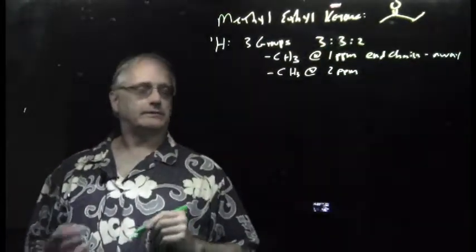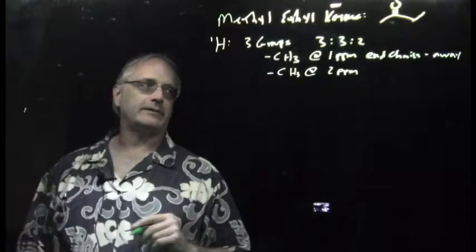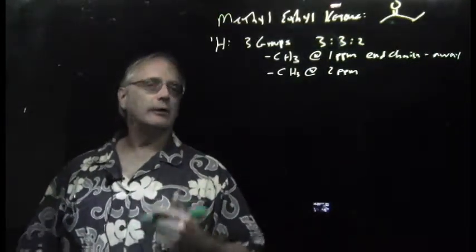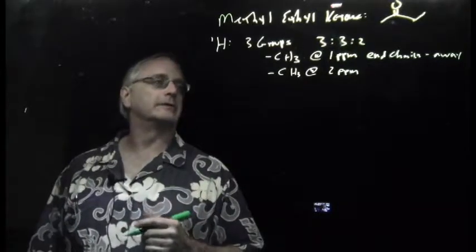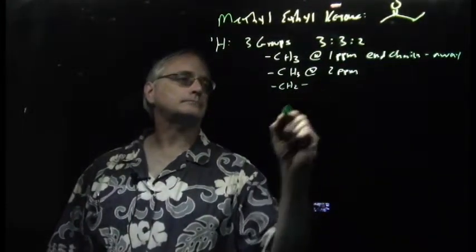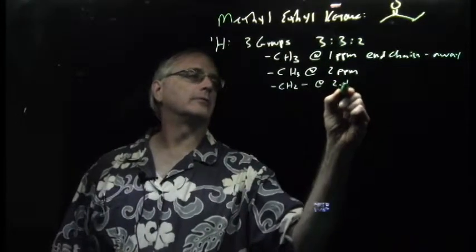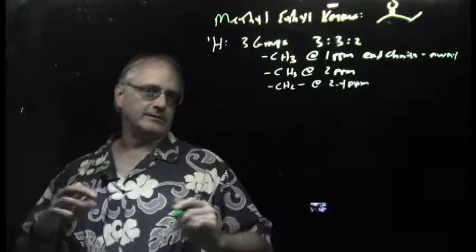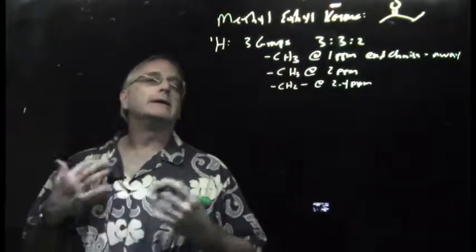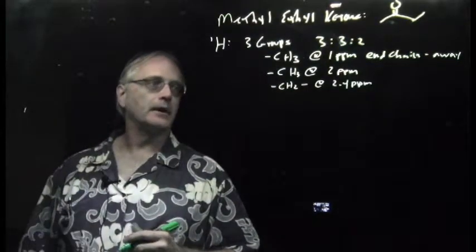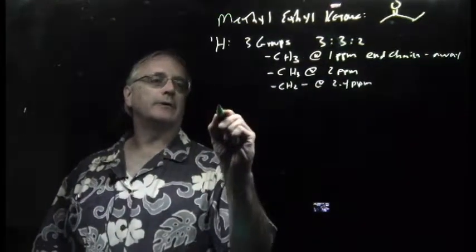I have a CH3 at around 2 ppm. Now, 2 ppm isn't a hugely distinctive region. There's a lot of stuff there, but this is an indication that this methyl group is closer to something a little more interesting than the first. And I also have a CH2 group. And this is at 2.4 ppm or so, which, again, is not distinctive up around 4 or any position higher, but it is an indication it's around something fairly interesting.